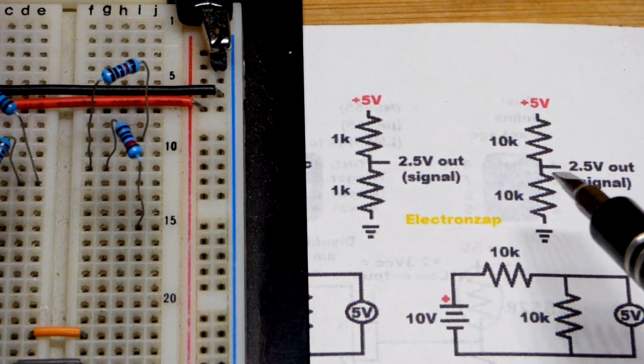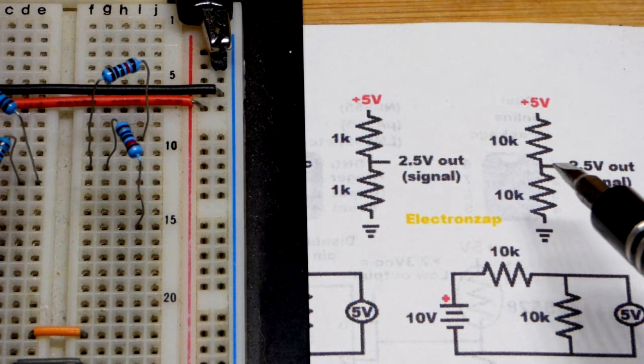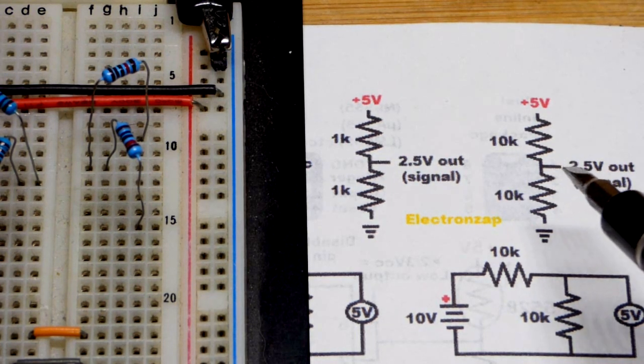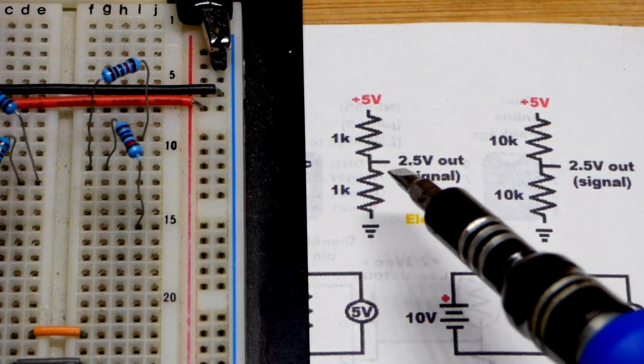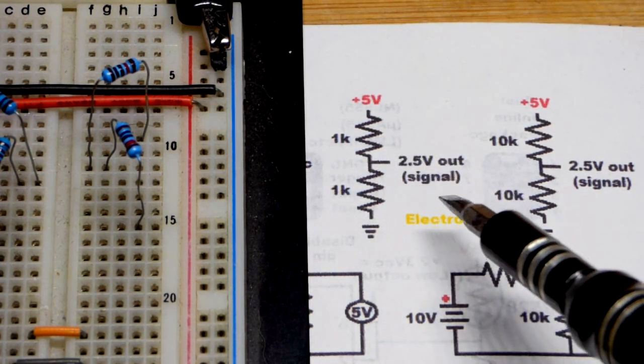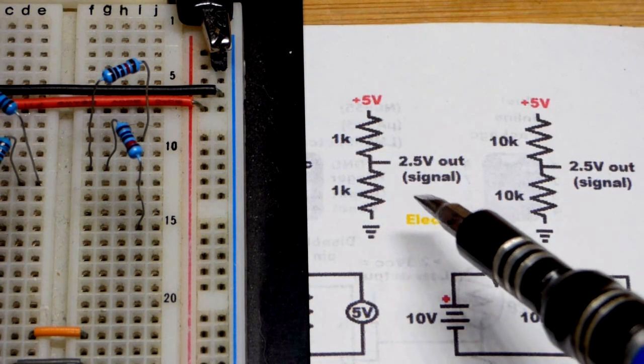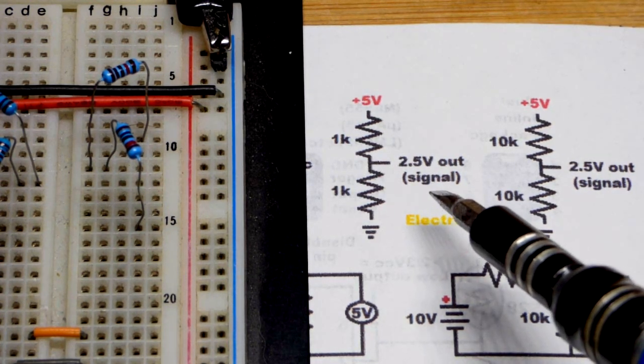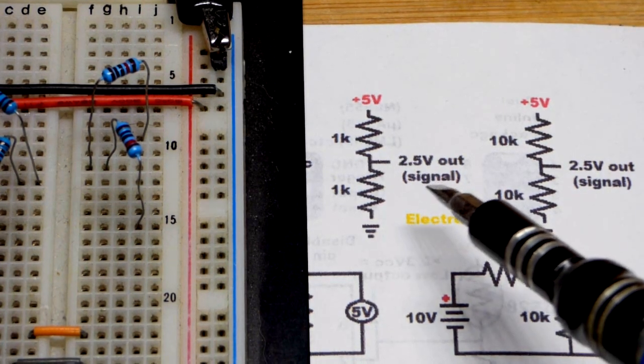So especially this one, if it has to provide any current its voltage is going to go down rapidly. Same with this one but not as rapidly because they are lower. But in any case these are just signal voltages. They're meant to go to the input of other circuitry that just responds to that voltage and doesn't need current.